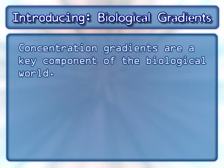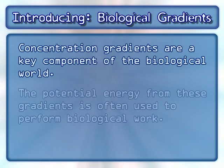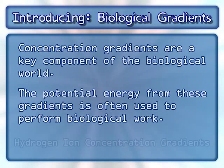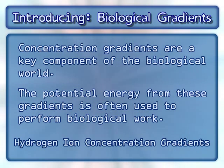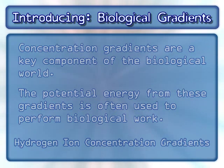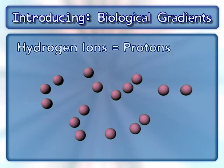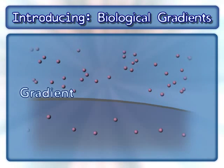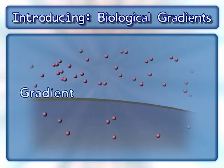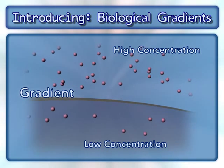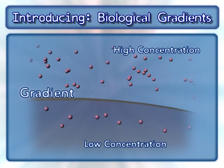Concentration gradients are a key component of the biological world. The potential energy from these gradients is often used to perform biological work. Here we will focus on hydrogen ion concentration gradients. Hydrogen ions are also known as protons. A gradient exists when there is a higher concentration of a molecule in one compartment compared to a neighboring compartment.